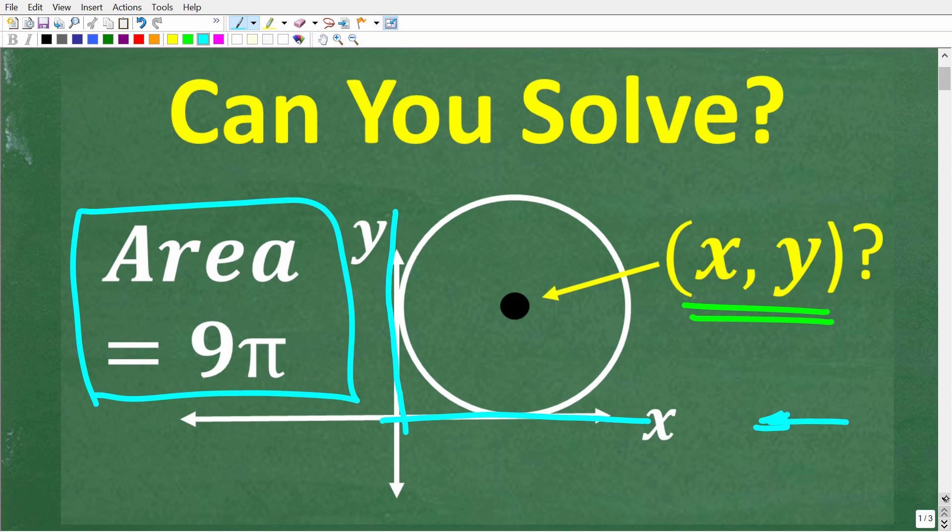One more time, we have this circle that is tangent. That word tangent simply means that this circle is barely touching the x-axis and barely touching the y-axis.